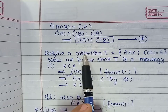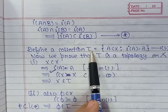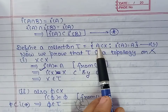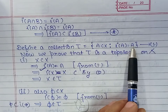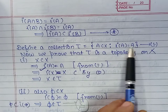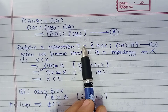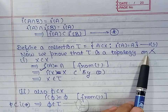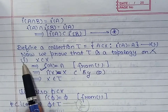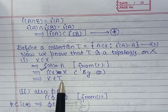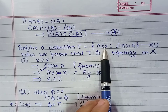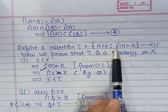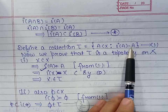Now let us define a collection τ as the collection of all those subsets A of X such that I of A is equal to A. We will now prove that this collection τ is a topology on the set X. Any set belongs to τ if it is a subset of X and I of that set equals the same set.